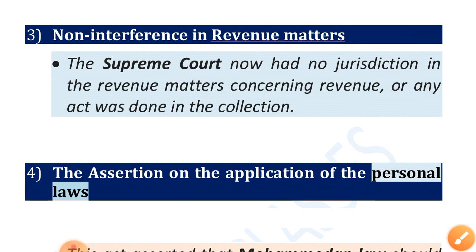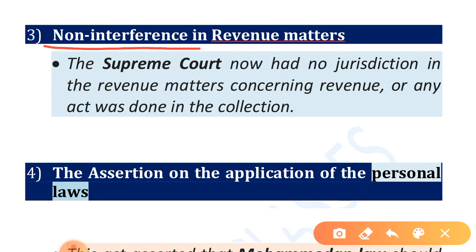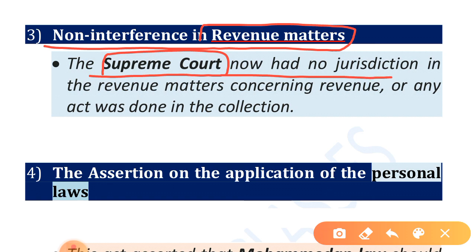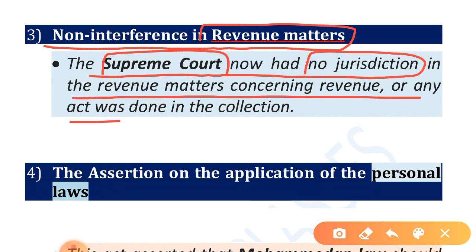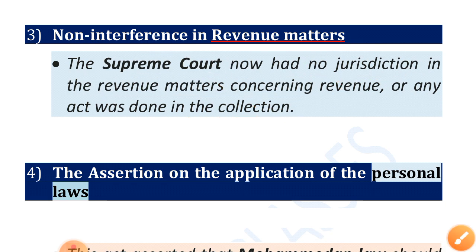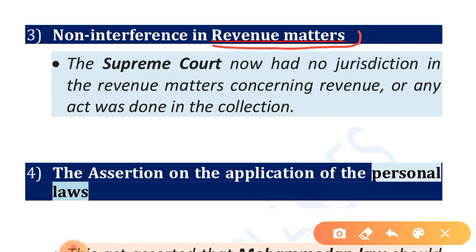Next: non-interference in revenue matters. The Supreme Court now had no jurisdiction in revenue matters or any act done in the collection of revenue. Revenue-related jurisdiction was completely removed from the Supreme Court. Therefore, the government became independent of the control of the court in matters of revenue.